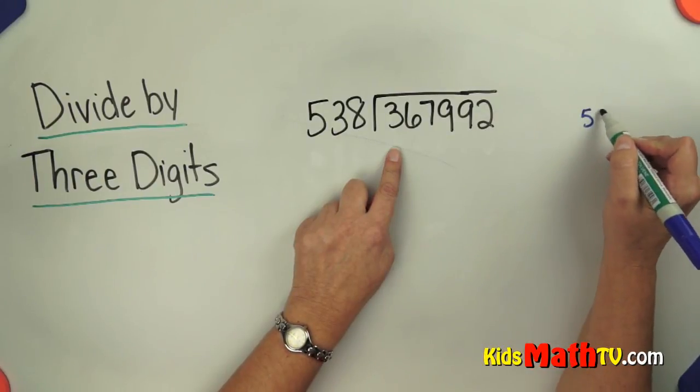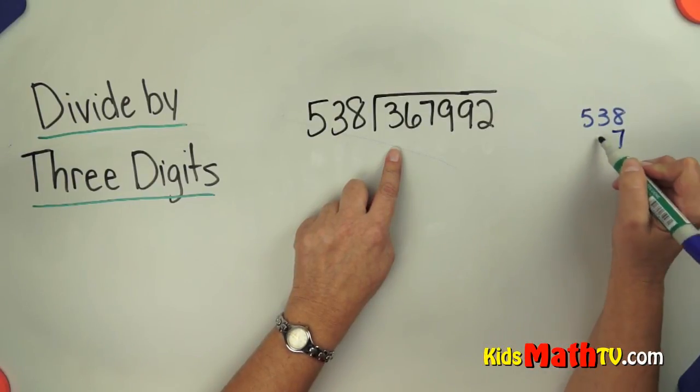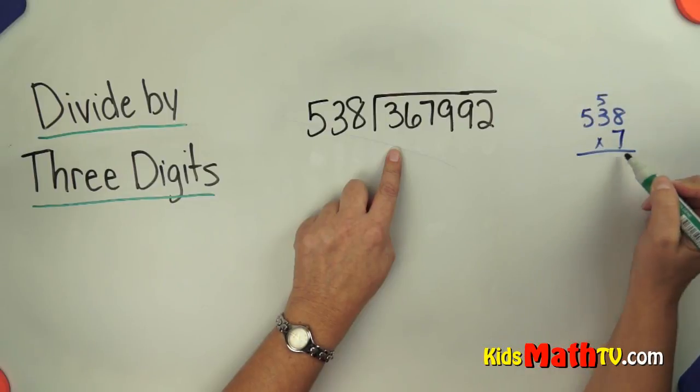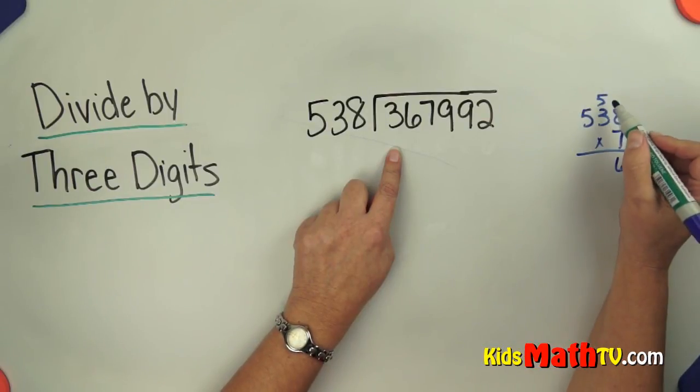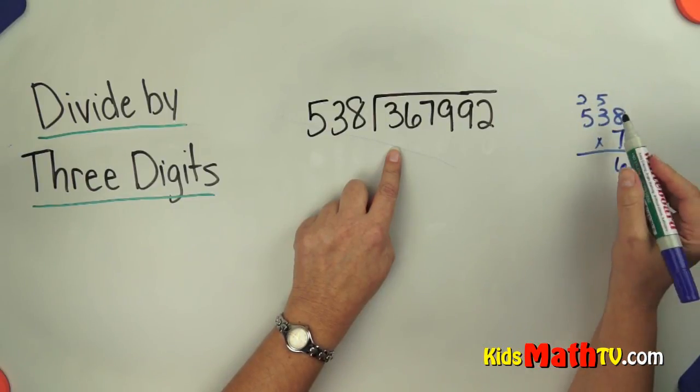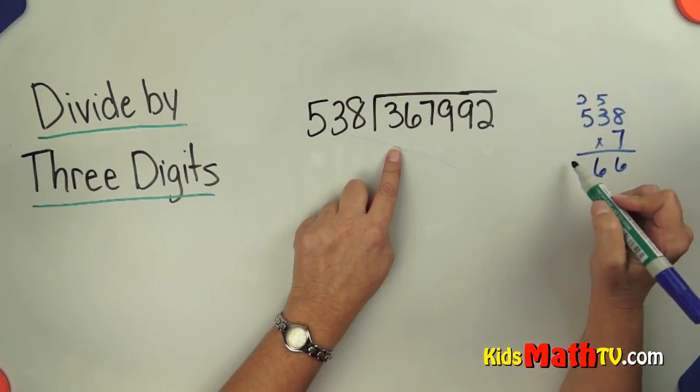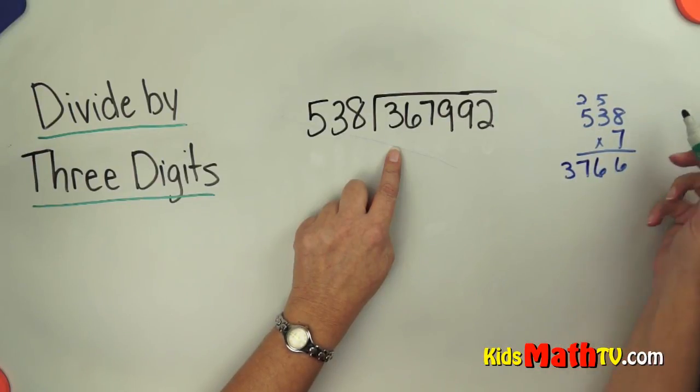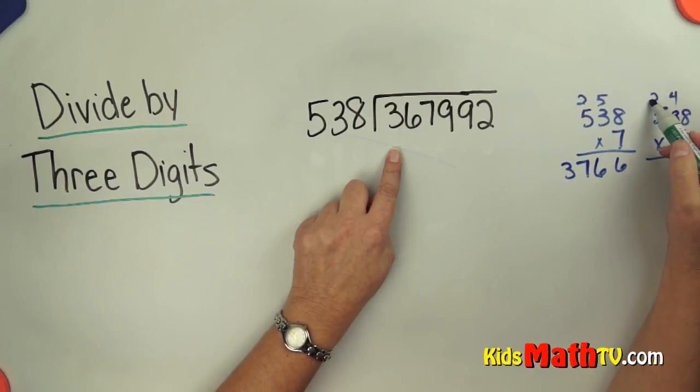So I'm going to try 538 times 7 over here. 56, 21, 26, 35, 36, 37. Just too much. So 538 times 6, 48, 18, 19, 21, 22, 32.